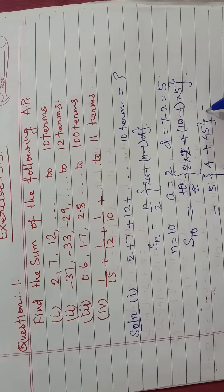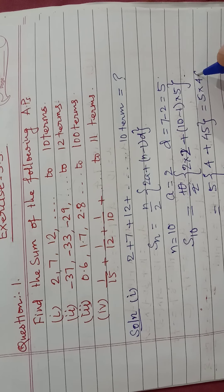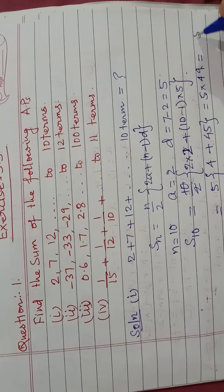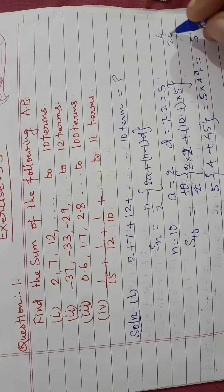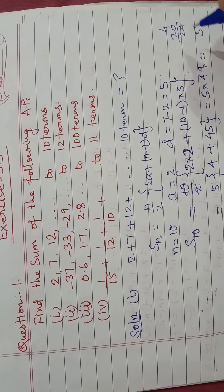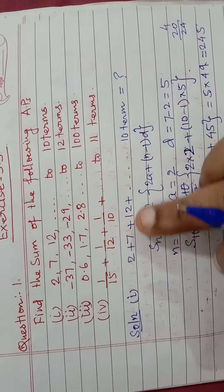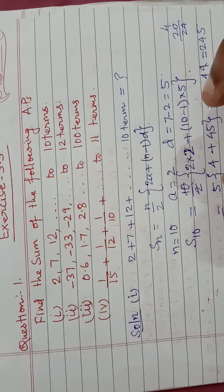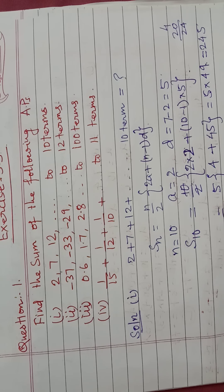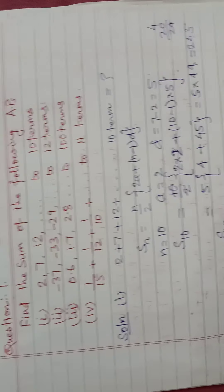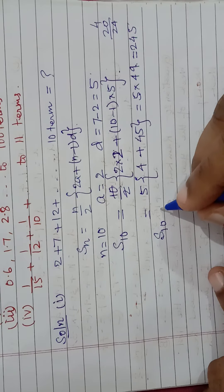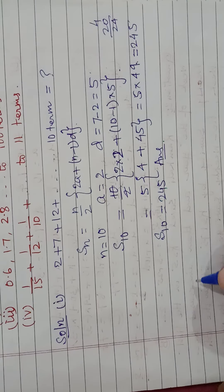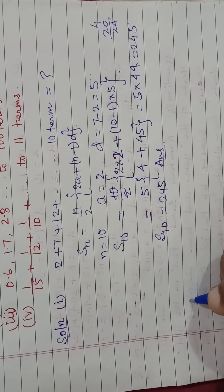So it is 5 into 49, which gives us 245. If we take ten terms of this arithmetic progression and add them, the sum S10 will be 245. That is the answer.